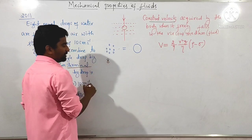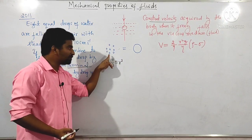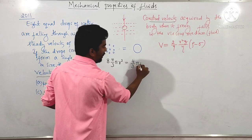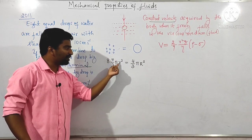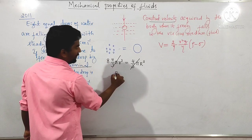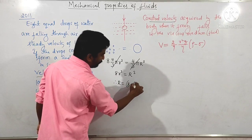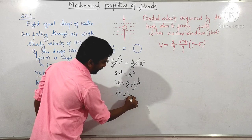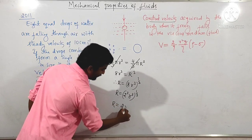Volume of 8 liquid drops, each of radius r, equals 8 multiplied by (4/3)πr³, which equals the volume of the bigger sphere (4/3)πR³. So R³ equals 8r³. Since 8 equals 2³, we get R equals 2r. The radius of the bigger drop is equal to 2 times the radius of the smaller drop.